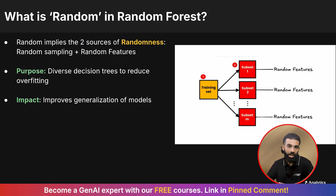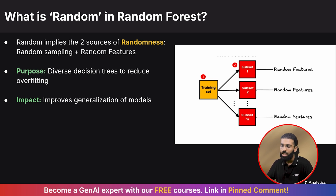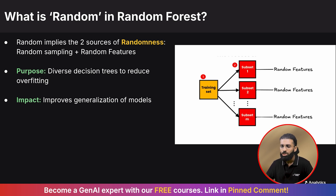Another favorite question is: what is 'random' in random forest? You should explain that the word random refers to two key sources of randomness that keep the model robust and less prone to overfitting. The first is random sampling of data, called bagging — each tree is trained on a random subset of training data selected with replacement. The second is a random subset of features, where at each split in a decision tree, a random subset of features is considered instead of all features. These randomizations create a diverse set of decision trees, reducing overfitting and variance.